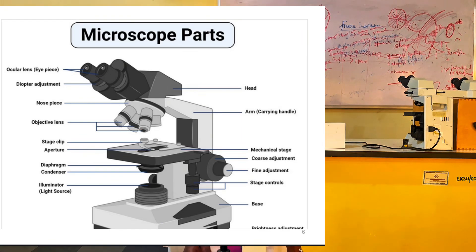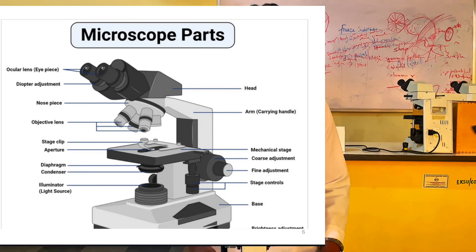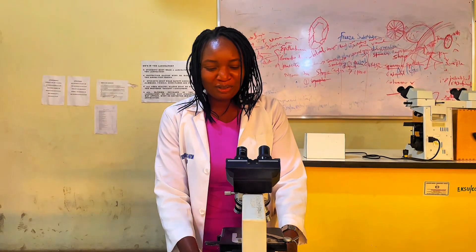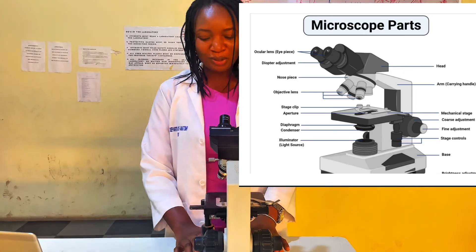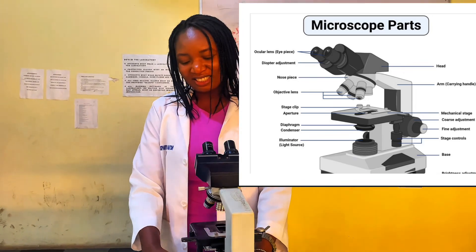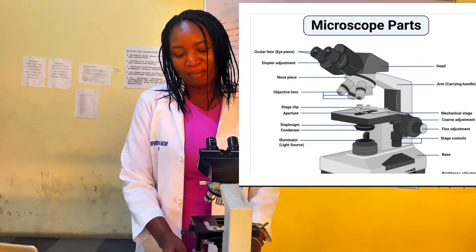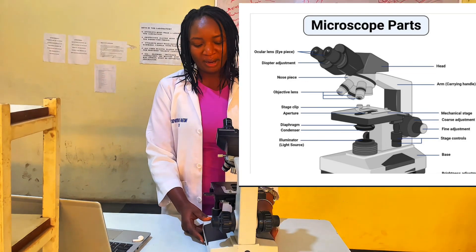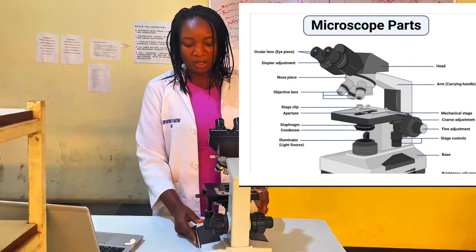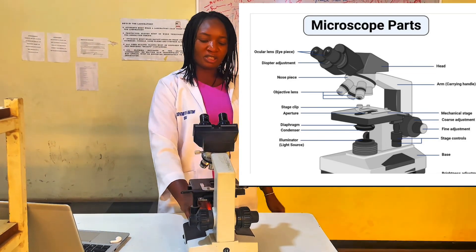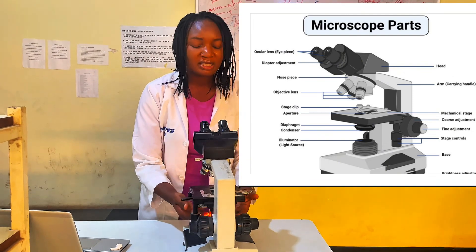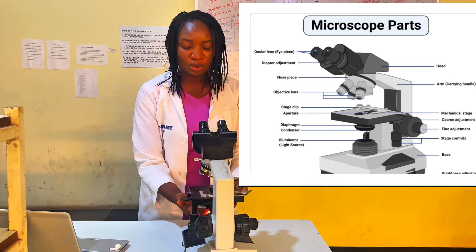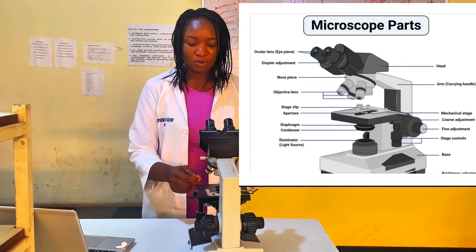Let's look at the different parts of the microscope and I am going to be demonstrating using the microscope in front of me. This is the base of the microscope where the microscope sits on. This is the switch of the microscope where the microscope is turned on and off. And this is the illuminator or the light source where the bulb brings about the illumination into the microscope.